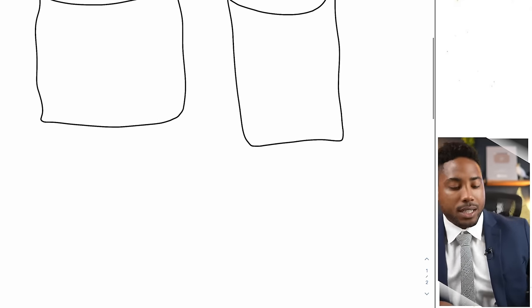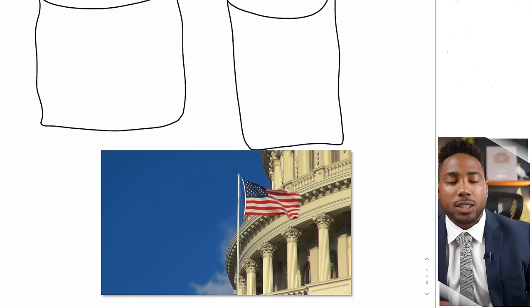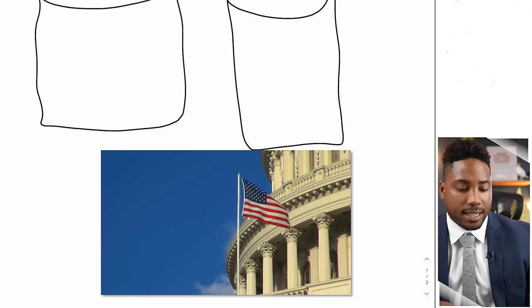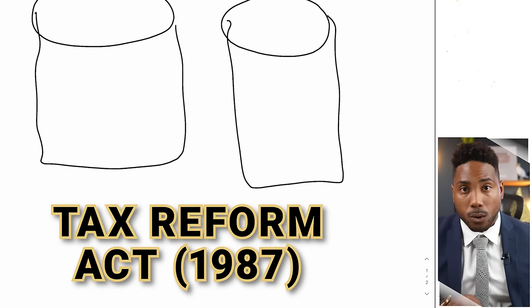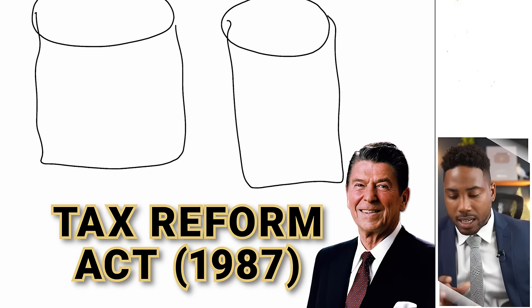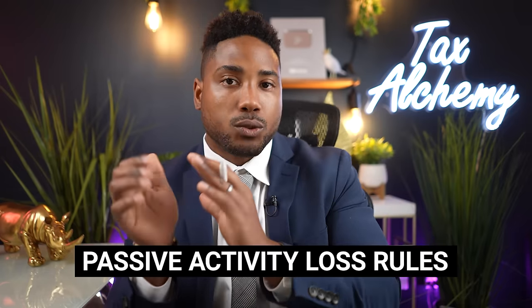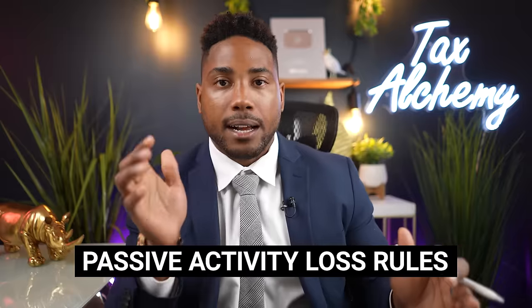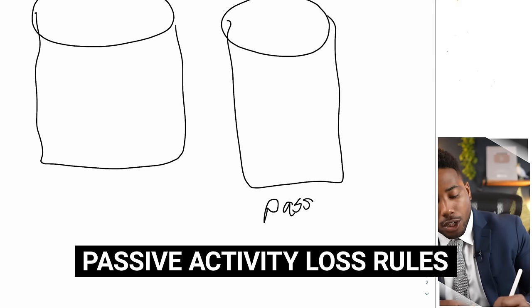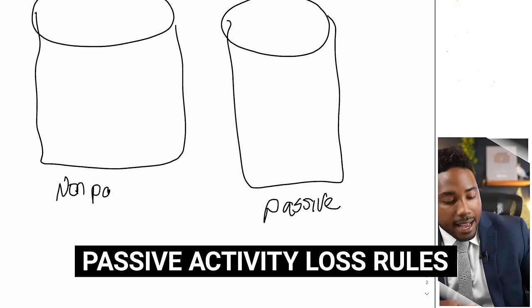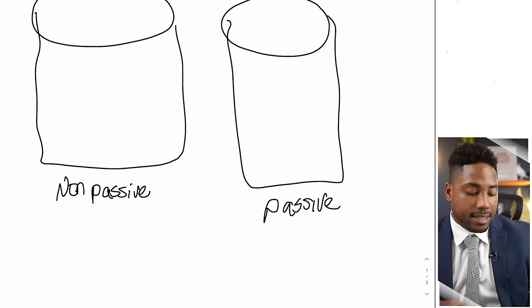The first thing I want to talk about is the difference between passive income and non-passive income. The government created two different buckets back in 1987. In 1987, there was the Tax Reform Act that occurred under Ronald Reagan. When Reagan implemented the Tax Reform Act, he got rid of a lot of tax loopholes, and as part of that, he implemented the passive activity loss rules, which separated passive income from non-passive income. That is how it's defined inside of the IRS tax code.